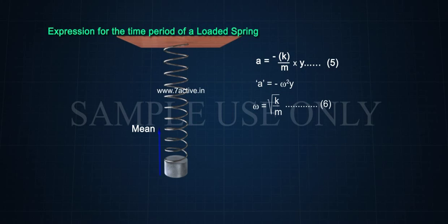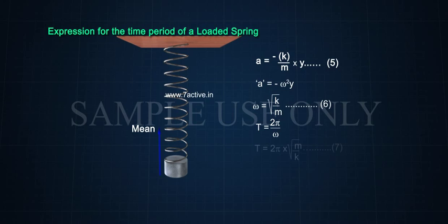From the known formula for the time period of oscillation T = 2π/ω, and using the expression for ω, we get T = 2π · √(M/K).